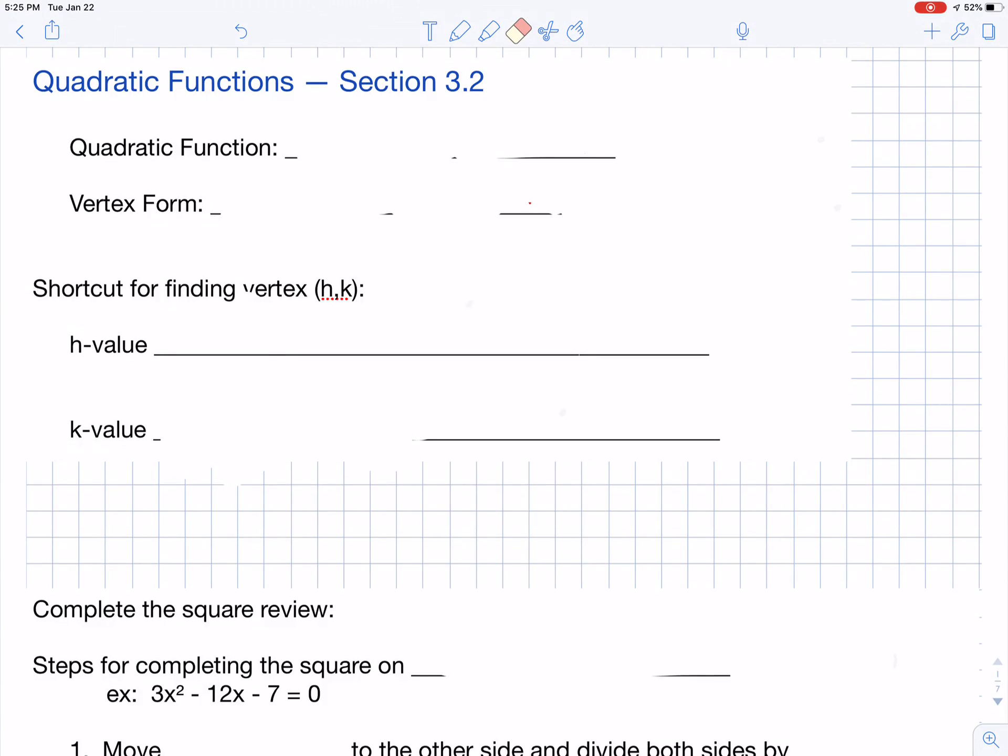First thing I want to do is just simply talk about two different formats of the same function. The first one is f of x equals ax squared plus bx plus c. We'll deal with this one even in the next video and then we're going to deal with it in future sections as well.